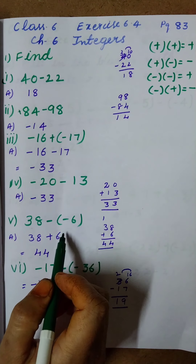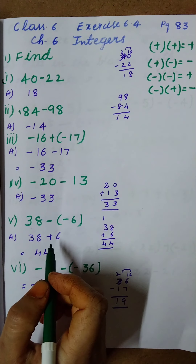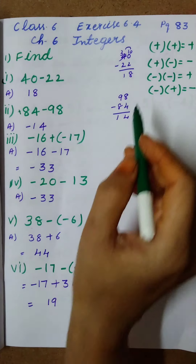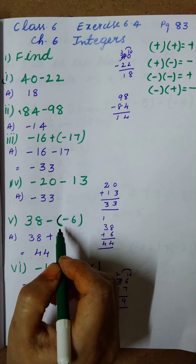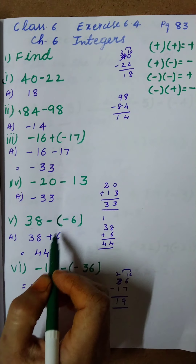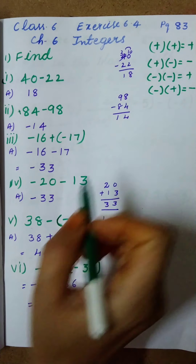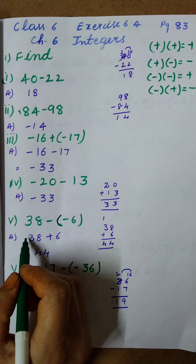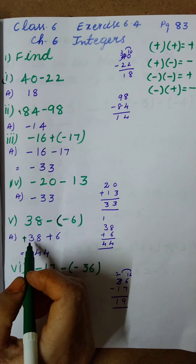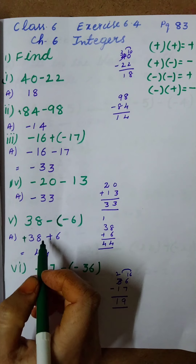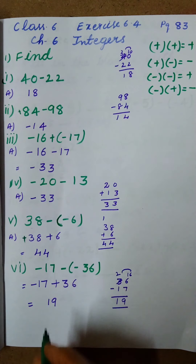Next: 38 minus of minus 6. There are two signs here. For the bracket, minus into minus gives plus, so it becomes 38 plus 6. For 38 there is no sign, meaning it is plus. Plus into plus gives plus, so we do addition: 38 plus 6 equals 44. The biggest number is 38 and its sign is plus, so the answer is plus 44.